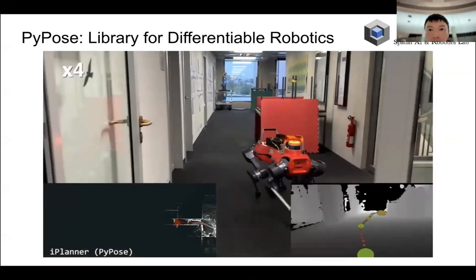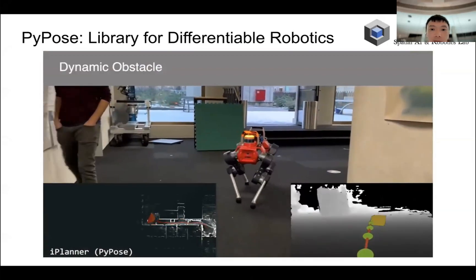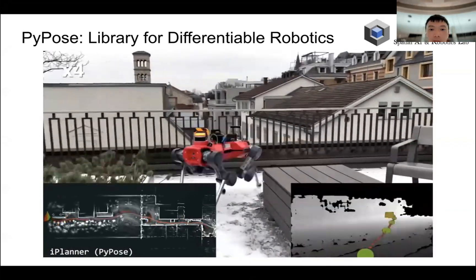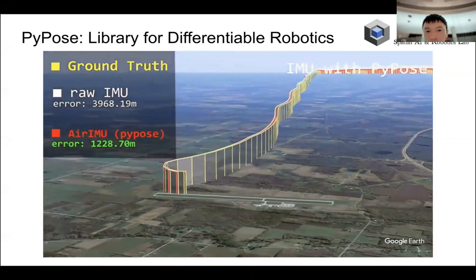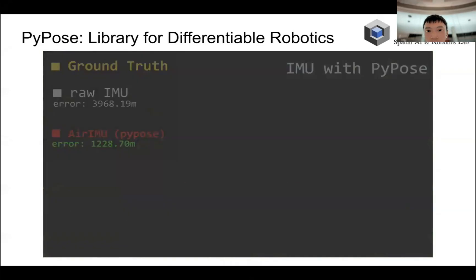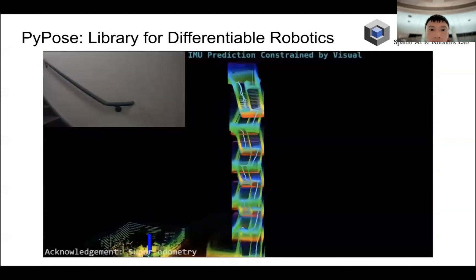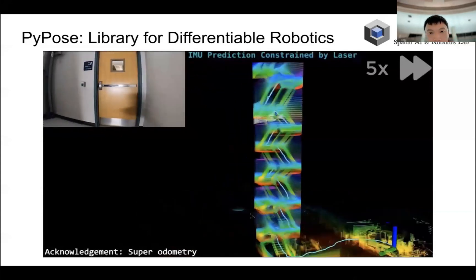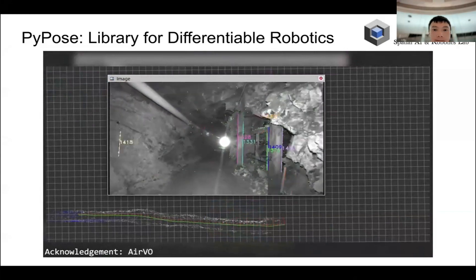By integrating differentiable trajectory optimization modules provided by PyPose, we are able to train an end-to-end local path planning network to predict the traversable space and generate physically feasible paths for dog robots. Also, by using differentiable graph optimization and differentiable IMU integrator in PyPose, we trained an uncertainty-aware IMU calibration model which can reduce odometry drift dramatically. Our optimized Lie algebra and Lie group sensors enable easier end-to-end training on many robotic tasks, supporting both LiDAR and camera input for SLAM.